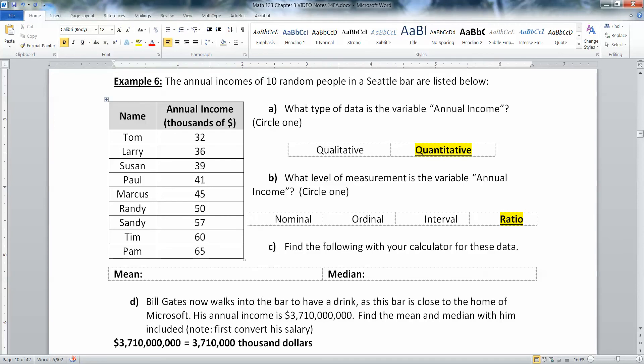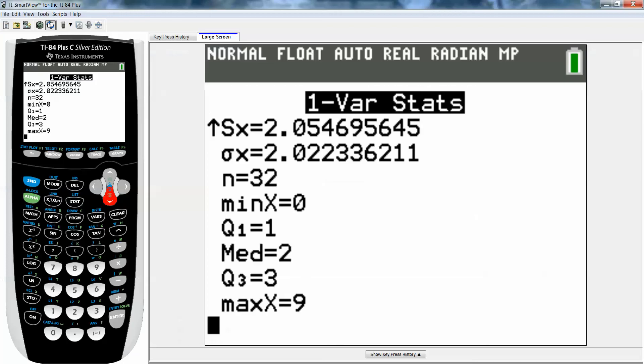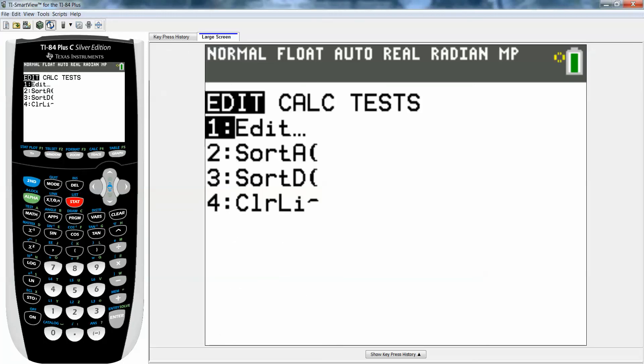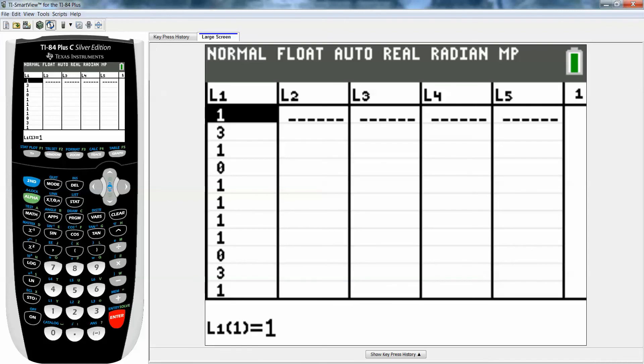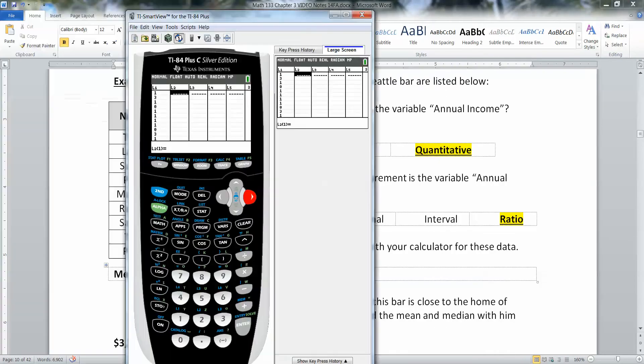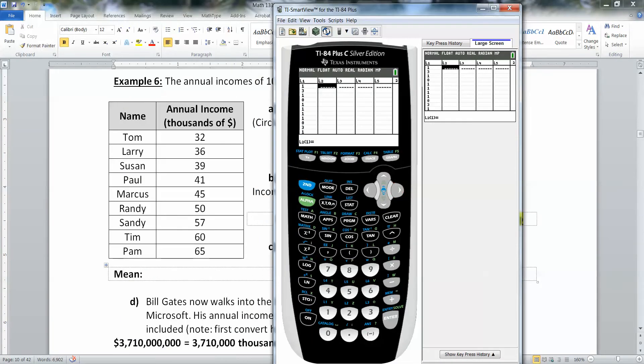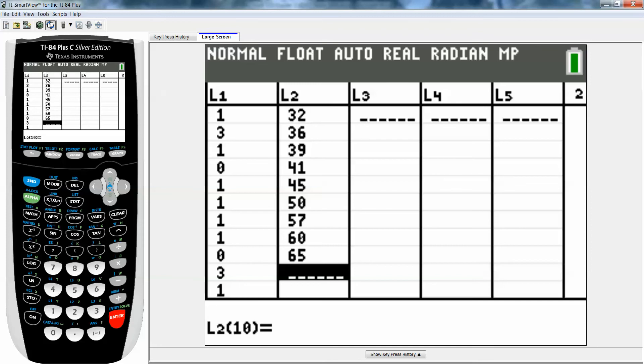Now we are going to find the mean and the median with our calculator. Let me go back to this and press stat, edit, and I'm actually going to put the data here in L2. So I'm going to type 32, 36, 39, 41. You could go up to the top and clear out the old column, press up with your up arrow and then clear, enter, and clear out all of L1. But I'm just going to leave it in L2.